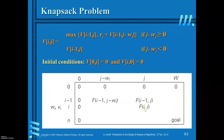In general, f[i][j] is equal to the maximum of f[i-1][j] and v_i plus f[i-1][j minus w_i]. Whichever is maximum is assigned to f[i][j]. This is how you are required to find f[i][j], or equivalently v[i][j].